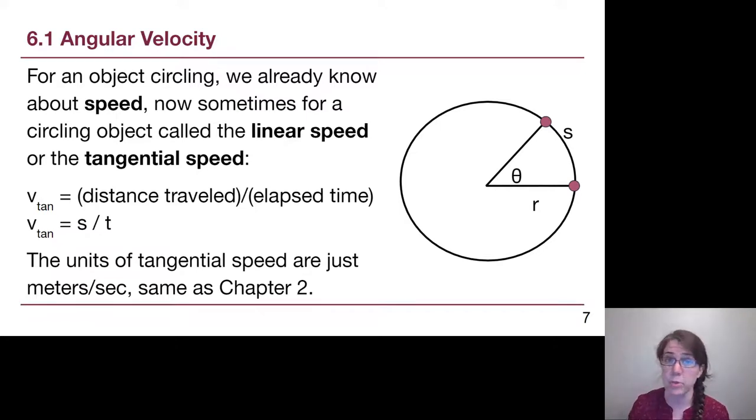The number value, which would be the speed, is distance traveled over elapsed time. If we're going around and around a circle, that distance is going to be the arc length s, and the elapsed time will be t. The units of this tangential speed are just meters per second. This is not fundamentally a new idea. We just want to recognize that it is not using displacement. Tangential speed helps us recognize that we can go around and around, racking up distance.